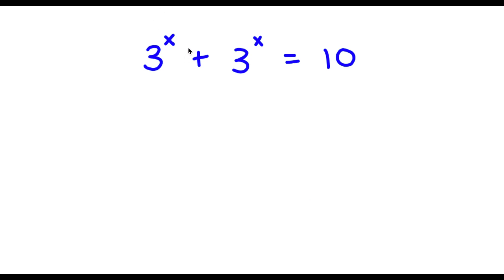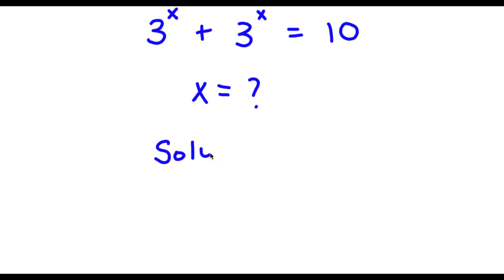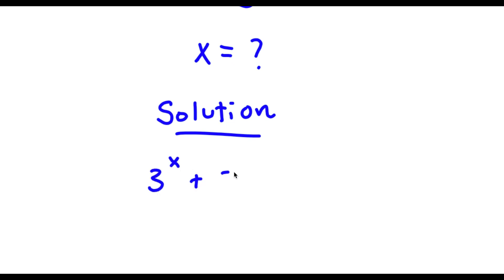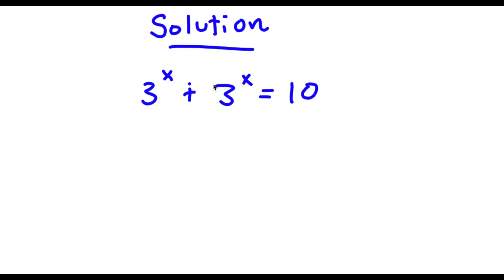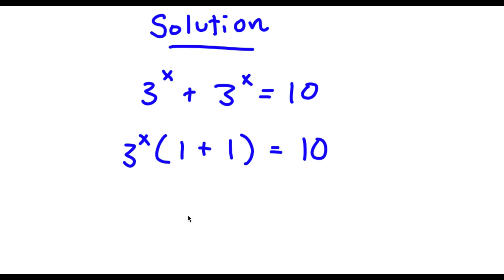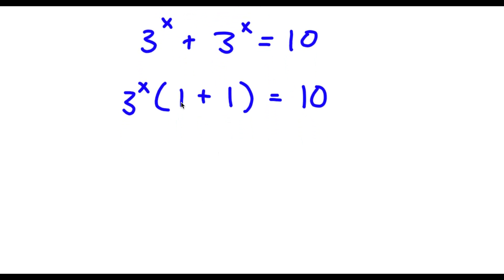Alright, so now I have 3 to the power of x plus 3 to the power of x is equal to 10, and I'm going to find the value of x. Starting with 3^x + 3^x = 10 — because I have two 3^x terms on the left hand side, I'm going to factor out 3^x. So now I have 3 to the power of x times (1 plus 1) is equal to 10. Now 1 plus 1 equals 2.